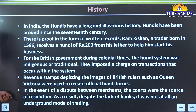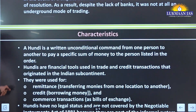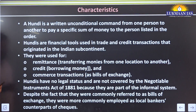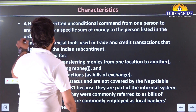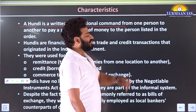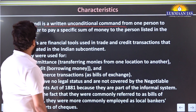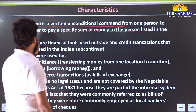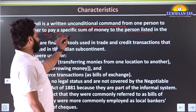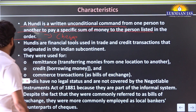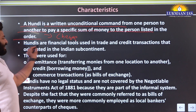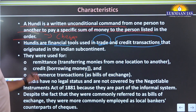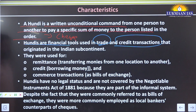Hundi was a wonderful aspect of medieval ages. Its key characteristic: a Hundi is a written unconditional command from one person to another to pay a specific sum of money to the person listed in the order - simply, it looks like a cheque. Hundis are financial tools used in trade as well as credit transactions.